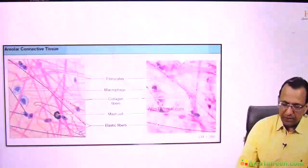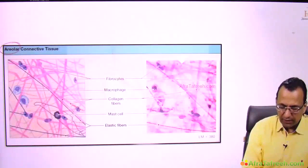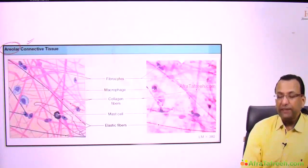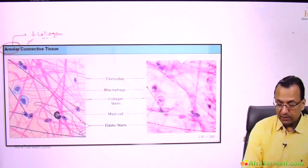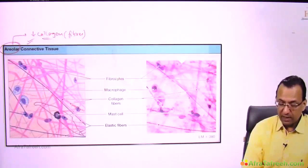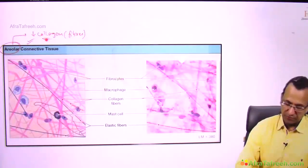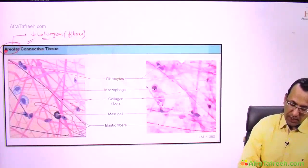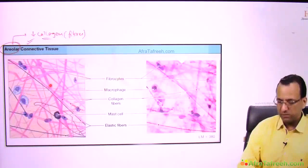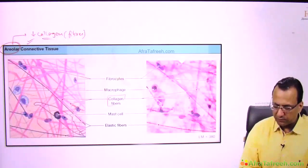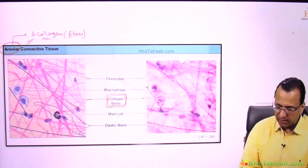If you are talking about the loose areolar connective tissue, it is called so because it has less of collagen fibers, or you can say the component of fibers is less. More cellular, less of fibers, and you will find that there are various types of fibers available. Generally we talk about collagen fibers comparing it with the elastic fibers.